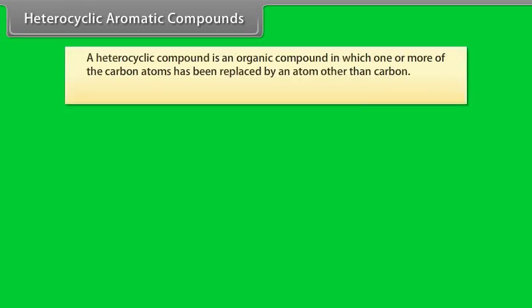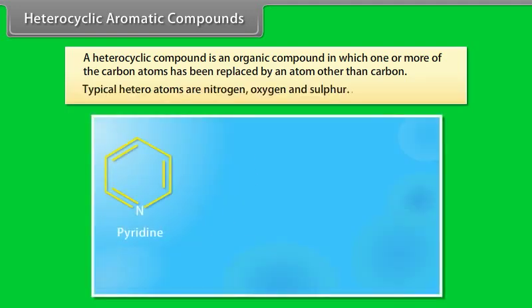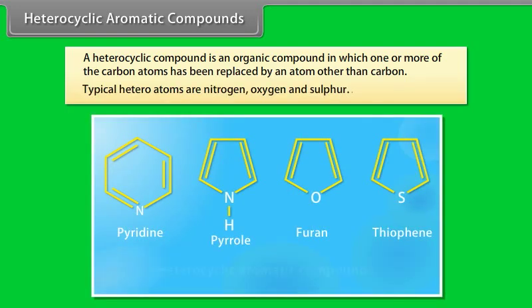A heterocyclic compound is an organic compound in which one or more of the carbon atoms have been replaced by an atom other than carbon. Typical heteroatoms are nitrogen, oxygen, and sulfur.